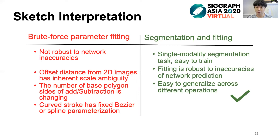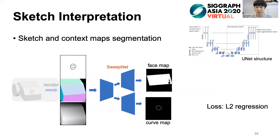For example, direct magnitude regression is not robust to network inaccuracies, and offset distance from 2D images has inherent scale ambiguity. Instead, we utilize a segmentation plus fitting scheme so that the whole network deals with a single-modality segmentation task, which is easy to train. The following fitting scheme is robust to inaccuracies in network predictions, and the strategy is easy to generalize across different operations. Specifically, the segmentation network has a standard U-Net structure, and two decoder branches output the face map and corresponding code maps. We train a separate segmentation network for each operator and use the L2 loss to supervise the dense map learning. Since the operator type is sweep, the sweep net is used to produce the output maps. Due to time limits, we take the sweep operator as an example to introduce the parameter fitting scheme; please refer to our paper for other operators.